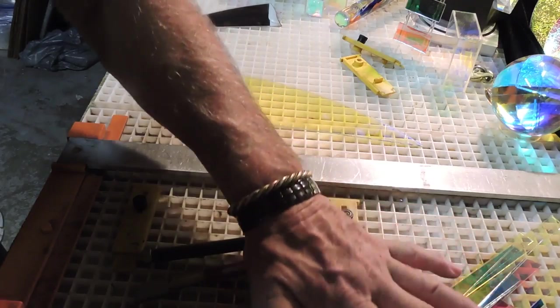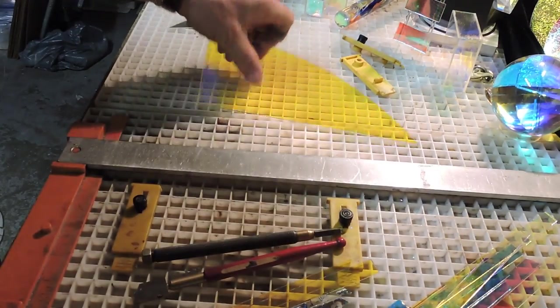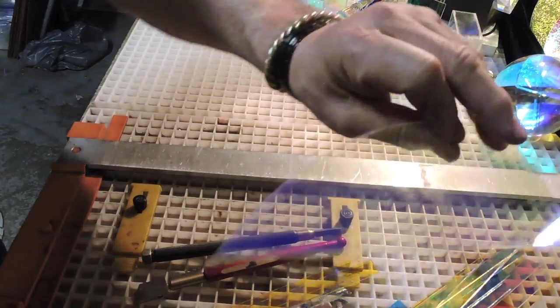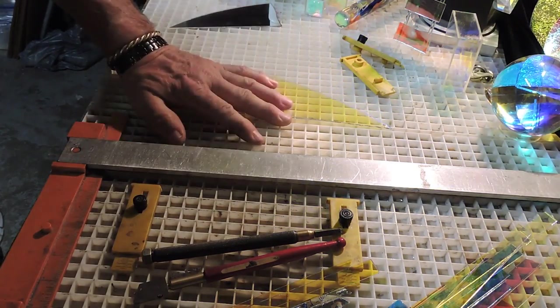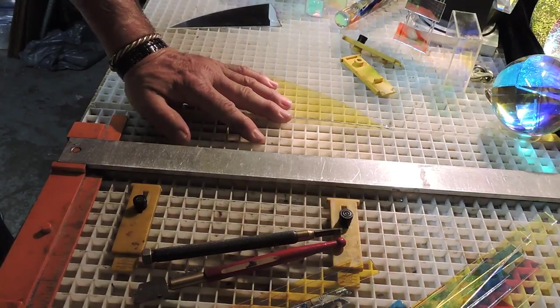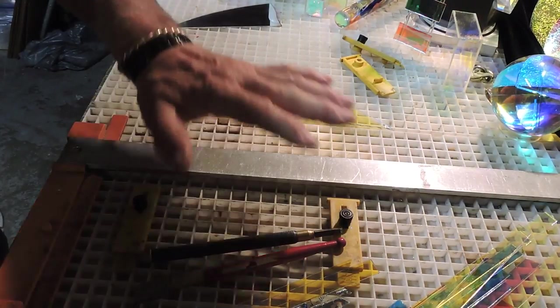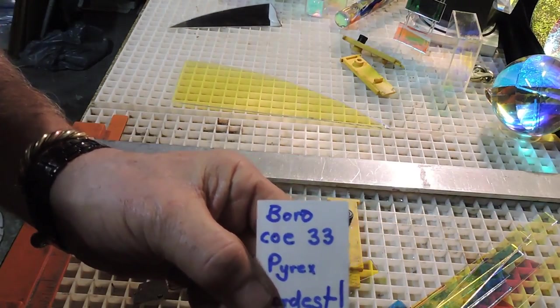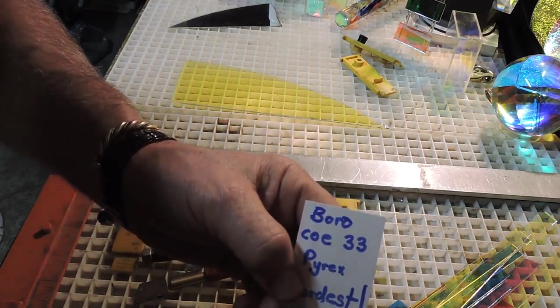Most people don't cut dichro on the dichroic side. When you're fusing glass, you're cutting it on the opposite side. Dichro is generally always coated on the textured side of the glass and that's the side you don't cut. So in this glass, not a lot of folks have messed with optical quality dichro.